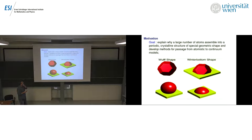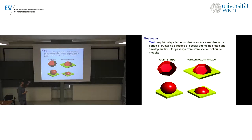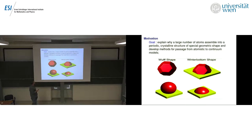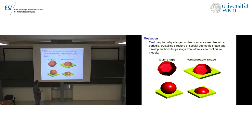The general goal is to explain why a large number of atoms are assembled into periodic crystalline structures or special geometric shapes. We are especially interested in thin-film atoms deposited on a substrate. Here you can see an example of a Wulff shape, and examples of when film atoms are deposited on a substrate, giving the Winterbottom shape. The second line shows two examples of the Winterbottom shape when the Wulff shape is simply a sphere, i.e., isotropic energy.